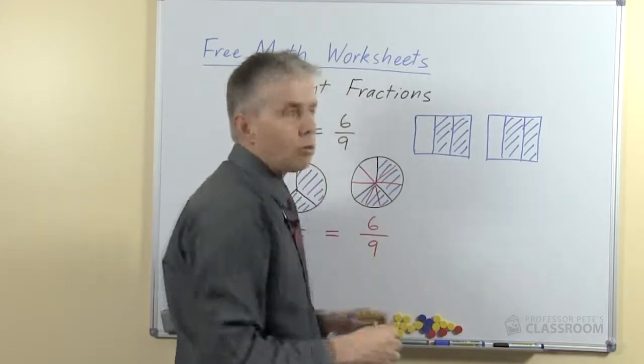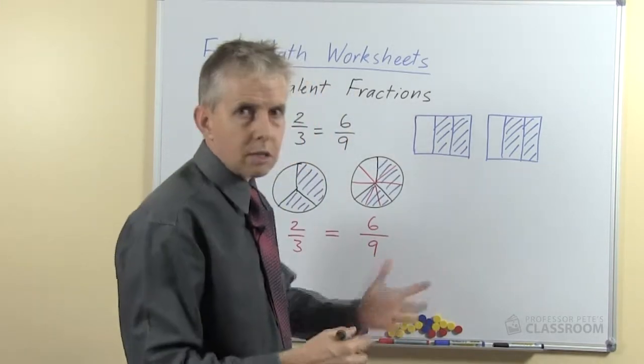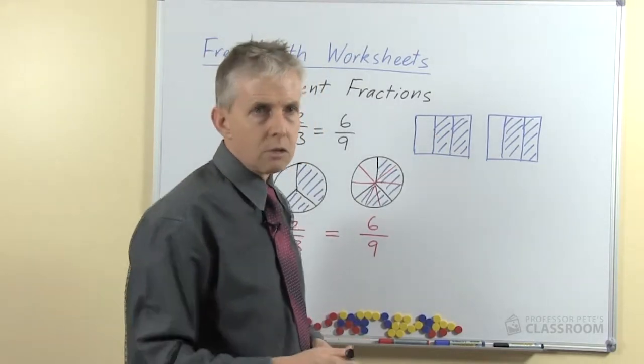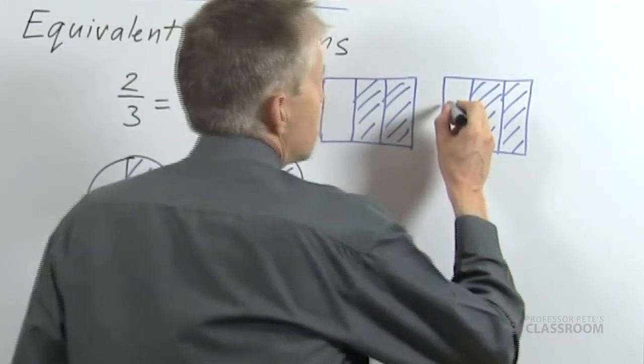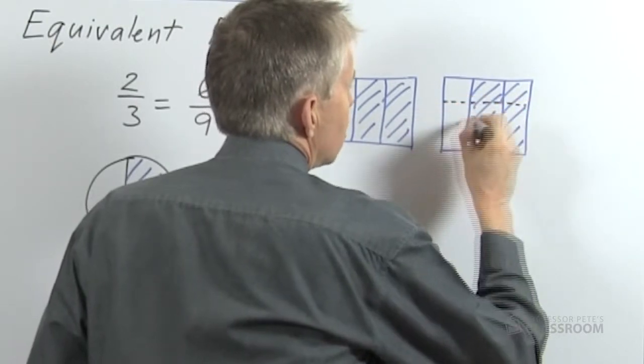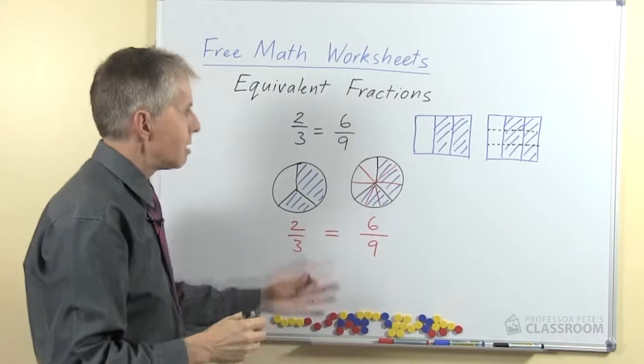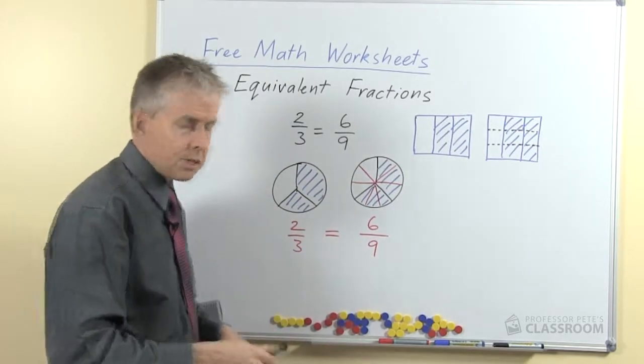As an alternative for me drawing the lines, I could ask a child to come out and draw onto the second shape and say, can you make this into ninths? And assuming they understand what ninths are and they've got good knowledge of fractions they'll be able to do that, and again we can see that two-thirds is the same as six-ninths.